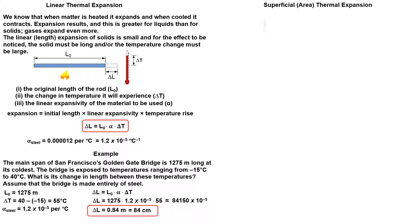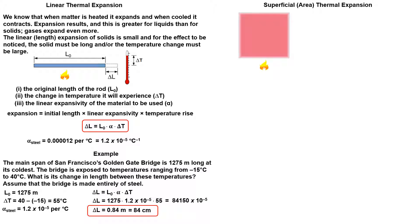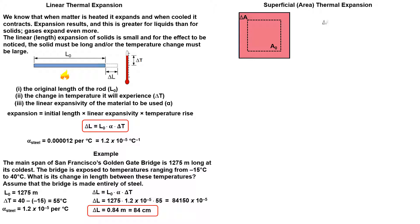Superficial area thermal expansion. Superficial expansion is the increase in surface area of a solid. The formula is: initial area times two times linear expansivity times temperature rise. Length and width both increase. Let's see how it works.